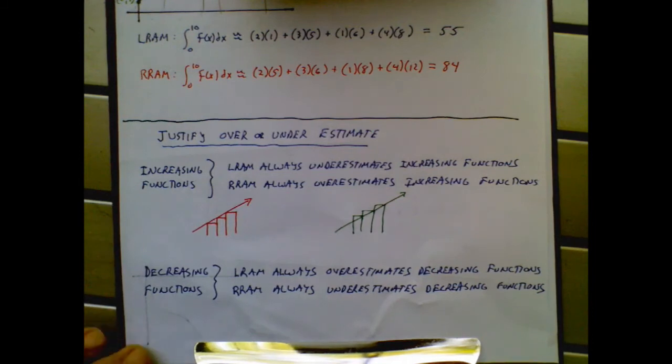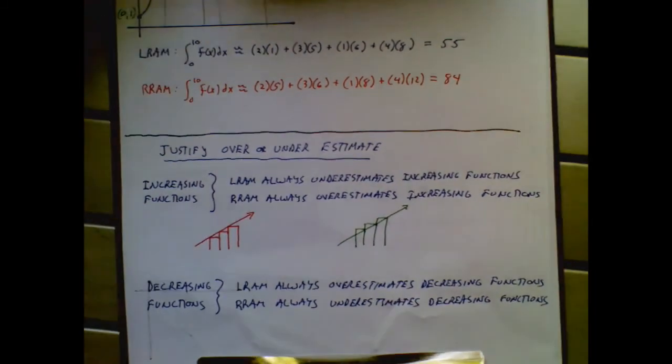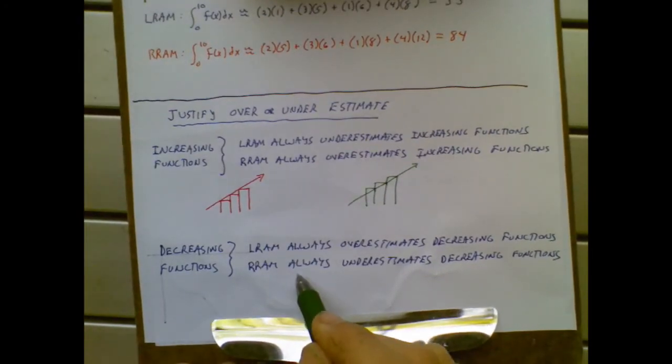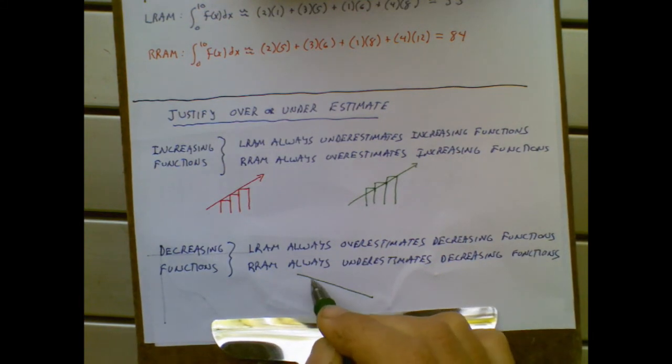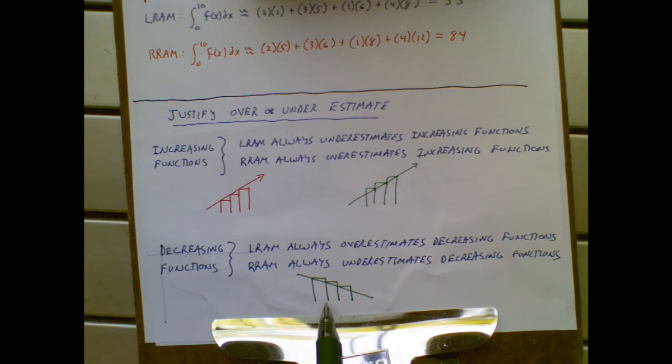And then, the same thing holds true down here with the decreasing function. You can always easily reason that out for yourself. I'll just do one of these. Because if I had a decreasing function and I started doing, say, LRAM, connecting all my rectangles on the left edge, I would be overcounting the area between the function and the x-axis. Thus, LRAM overestimates the decreasing function.